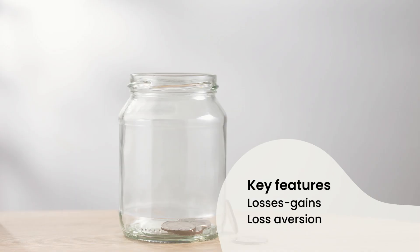So what are the key features of prospect theory? One is that people are more sensitive to losses than they are to gains. This means that they are more motivated to avoid losses than they are to pursue gains of the same size. This is known as loss aversion.